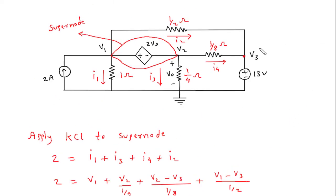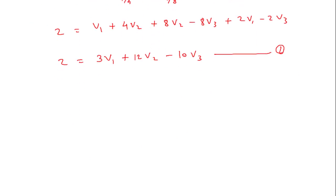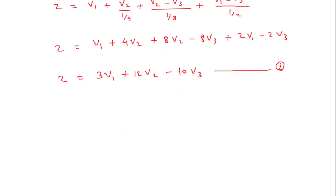Now this V3 is equal to 13 directly. V3 is equal to 13 volt because this 13 volt is directly connected to ground, so V3 is equal to 13 volt.